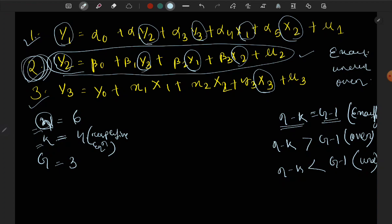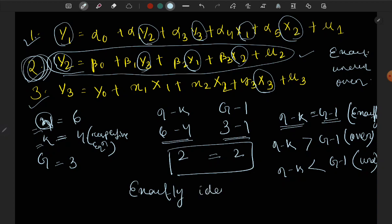Now we put the values: n minus k and g minus 1. n is 6, k is 4, g is 3. So 6 minus 4 equals 2, and 3 minus 1 equals 2. Since these are equal, the second equation is exactly identified.